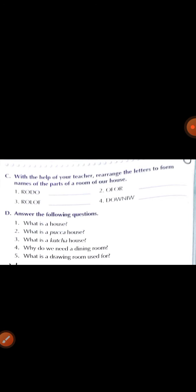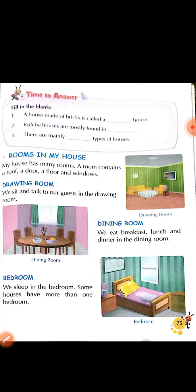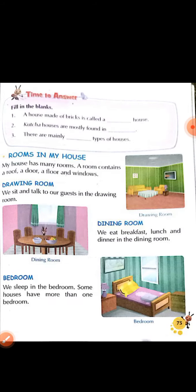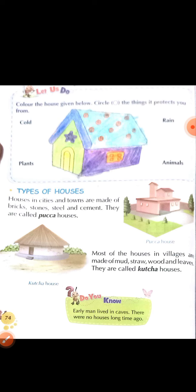Answer the following questions. What is a house? House kya hai? Everybody needs a space to live in — the space we live in is called our house. What is a pakka house? Houses in cities and towns made of bricks, stones, steel and cement are called pakka house. What is a kaccha house? Most of the houses in villages are made of mud, straw, wood and leaves — they are called kaccha houses.